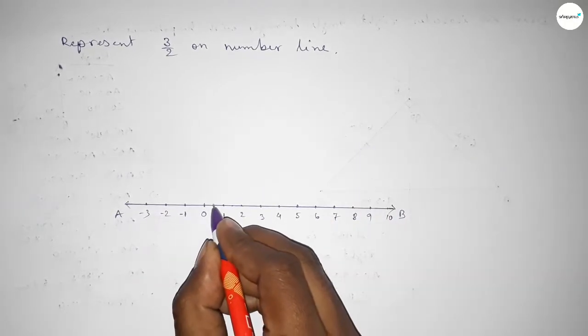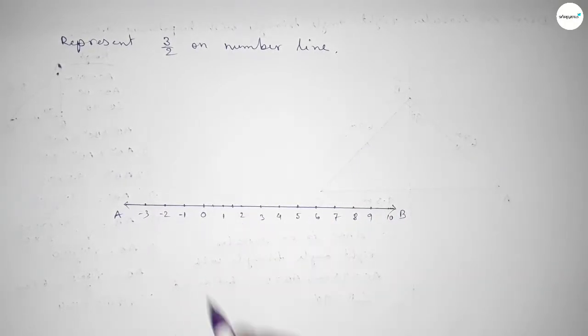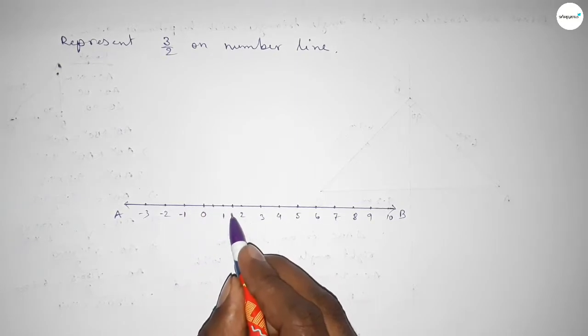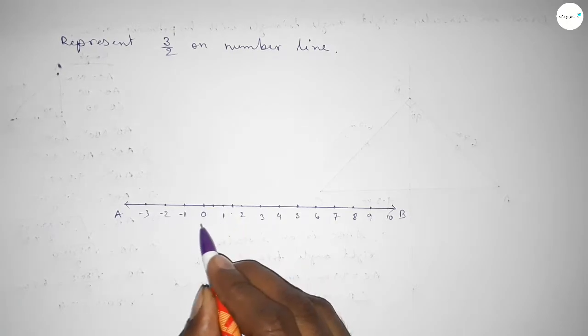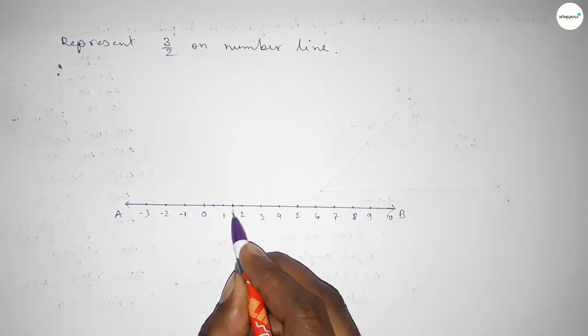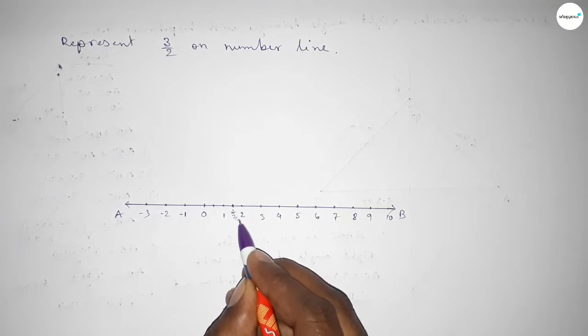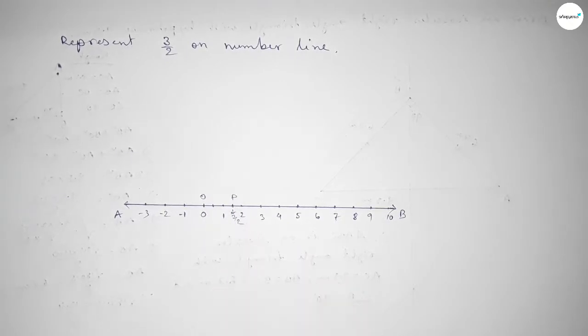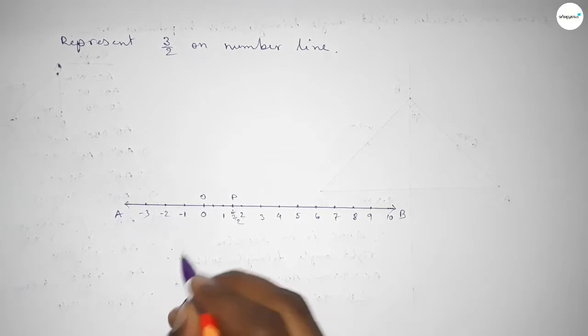So this is 1 over 2, 2 over 2, 3 over 2. So this is 3 over 2 on the number line. If we divided the distance between 0 to 1 and 1 to 2 by 2, then we can get 3 over 2.